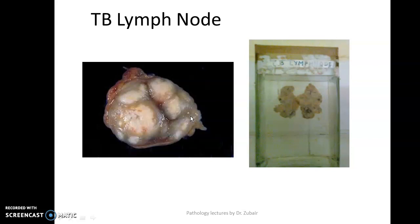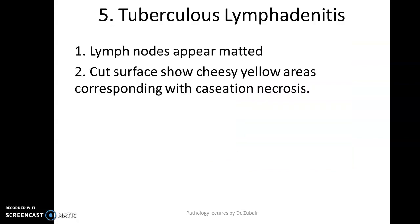As an examiner interested in tuberculosis as an example of granulomatous inflammation, I can ask you to list other causes of granulomatous inflammation. The answer includes sarcoidosis, cat scratch disease, and syphilis — all examples of granulomatous diseases. Or I can ask specifically about TB, such as what is the Ghon's focus. There are multiple ways the viva can go. These lymph nodes appear matted and the cut surface shows cheesy yellow areas corresponding to caseous necrosis.